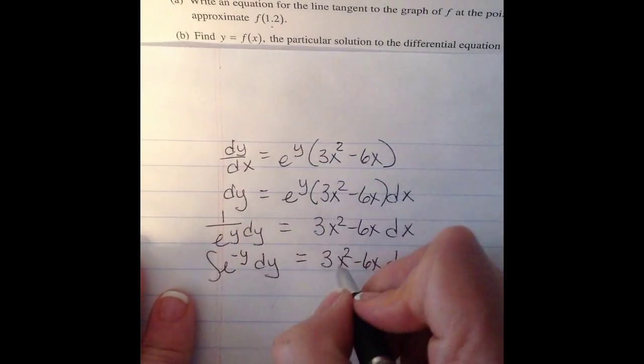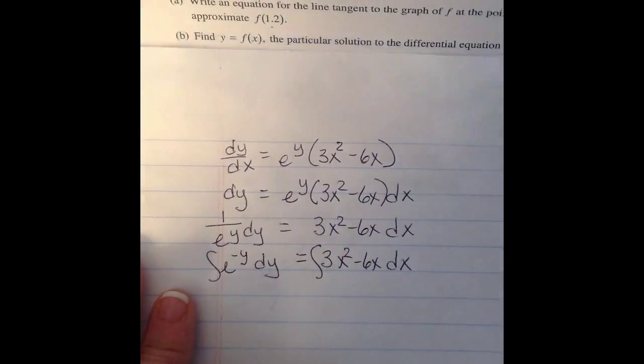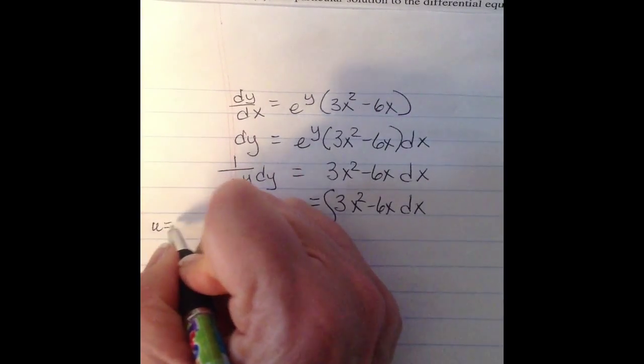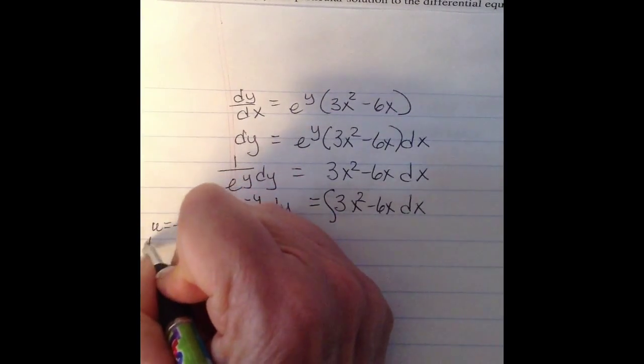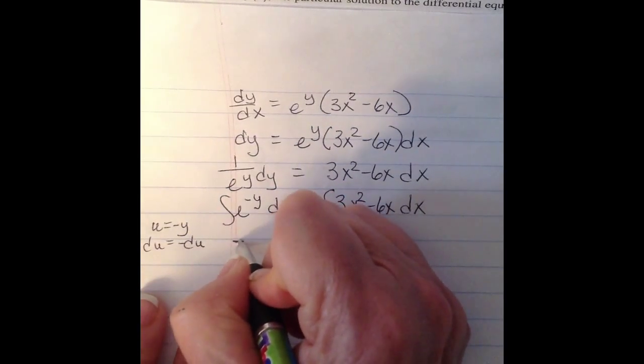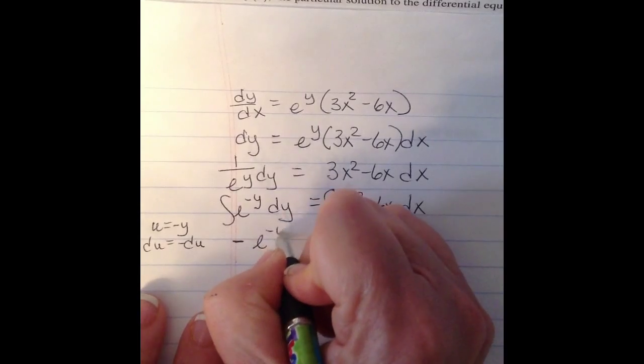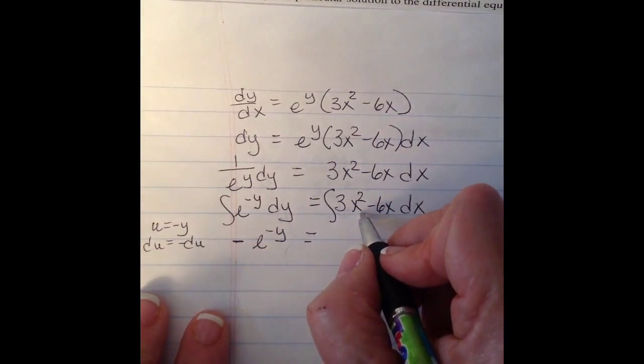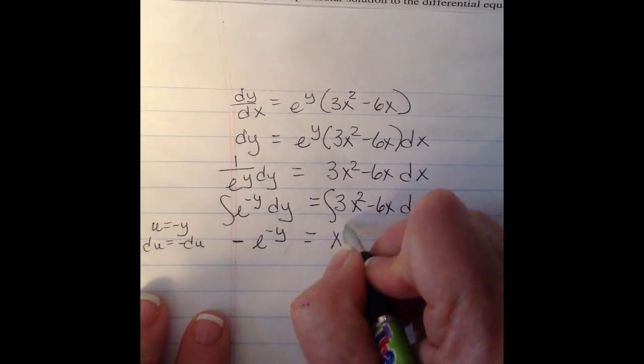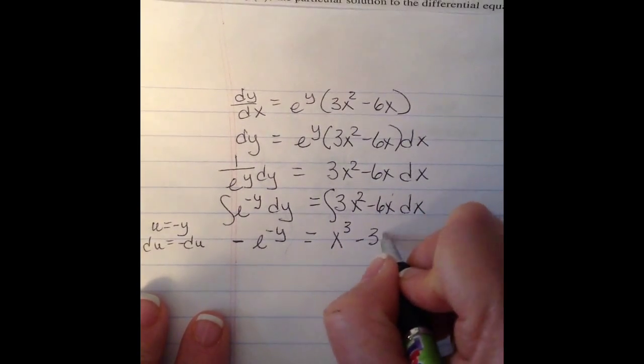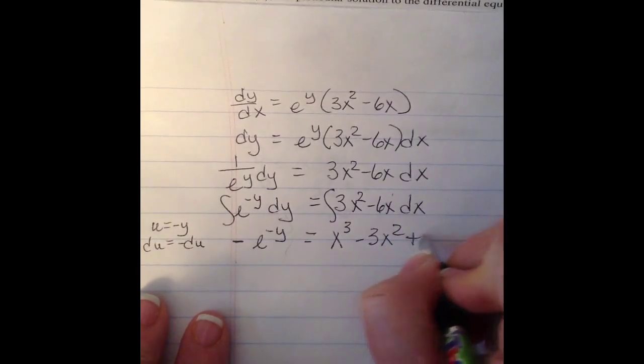And I'm going to write this as e^(-y) because it'll be easier to integrate. And now we're going to integrate both sides. I'm going to do u substitution. So this is going to be -e^(-y) = x³ - 3x² + c.